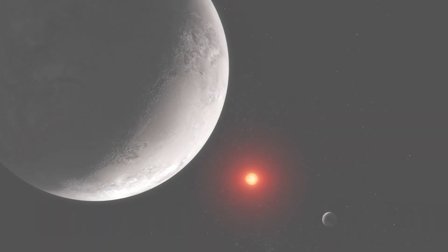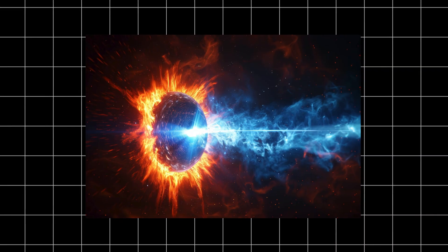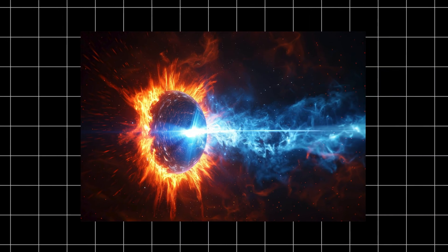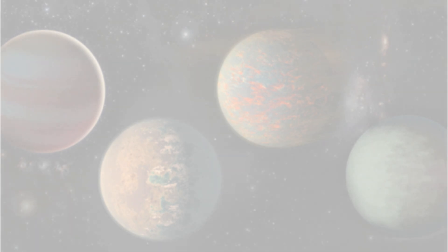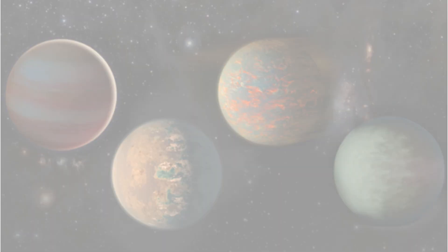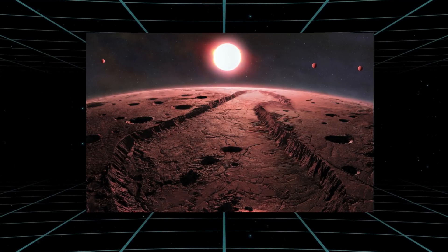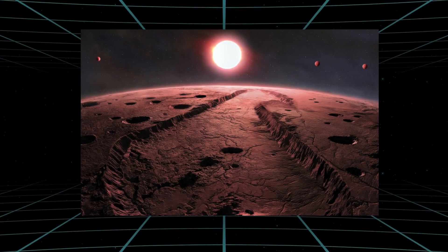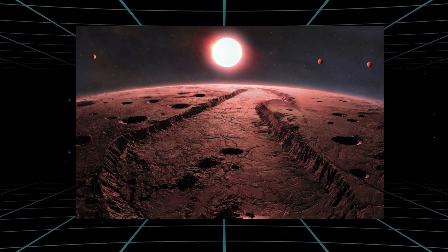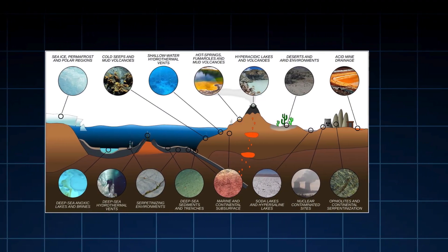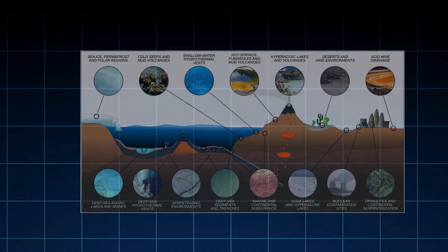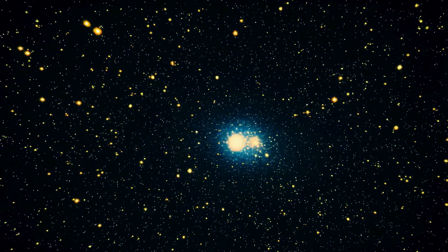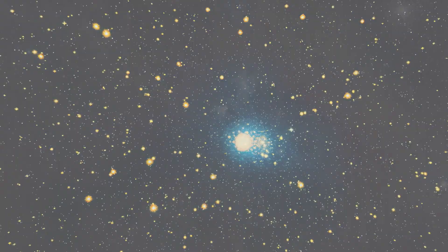As startling as resilient rocky worlds are, Webb's gaze has pierced even stranger realms. Around the spinning corpses of exploded stars, pulsars that blast gamma rays and gravitational tides capable of shredding ordinary matter, Webb has confirmed a Jupiter-mass planet, PSR J2322-2650B, orbiting impossibly close. Its shape is distorted into a lemon by tidal forces, yet it endures.